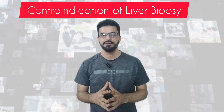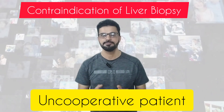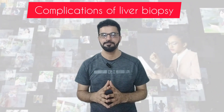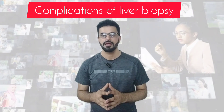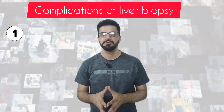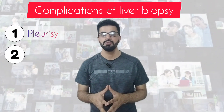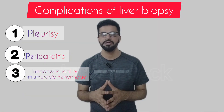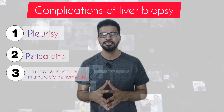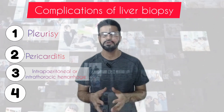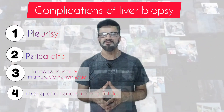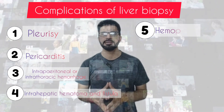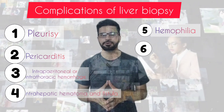Number five, suspected hemangioma — platelet count less than 1.6; number six, suspected echinococcal infection or subphrenic abscess; number seven, uncooperative patient. Complications of liver biopsy: number one, pleurisy; number two, pericarditis; number three, intraperitoneal or intrathoracic hemorrhage; number four, intrahepatic hematoma and fistula; number five, hemobilia; number six, biliary peritonitis.